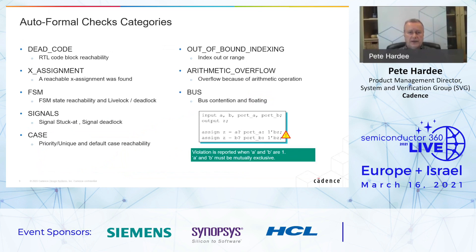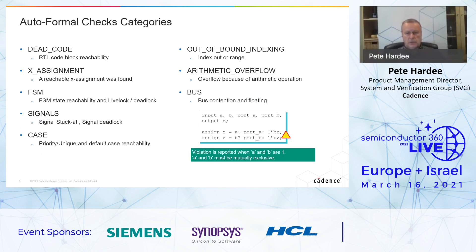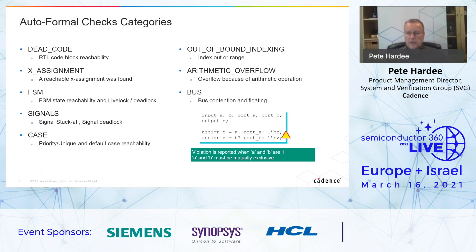The auto formal check categories of interest include: dead code, which is a code reachability check; X assignments; FSM checks covering state reachability, live lock, and deadlock; checks for signals stuck at and deadlock; case checks; out-of-bounds indexing checks; arithmetic overflow; and bus contention checks.